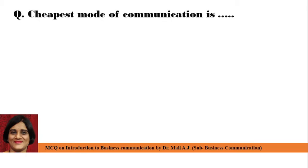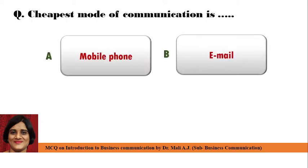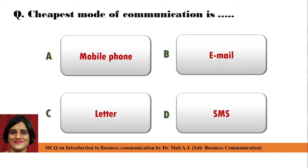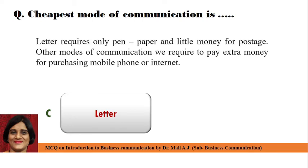Next question: Cheapest mode of communication is — Point A: Mobile phone, Point B: Email, Point C: Letter, and Point D: SMS. Correct answer is Point C: Letter. Cheapest mode of communication is letter. Because letter requires only pen and paper and little money for postage. Other modes of communication require extra money for purchasing a mobile phone or internet.